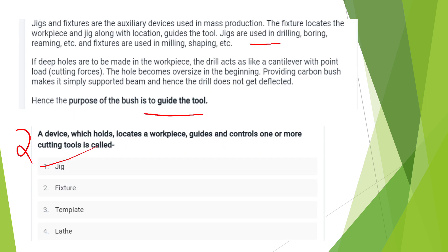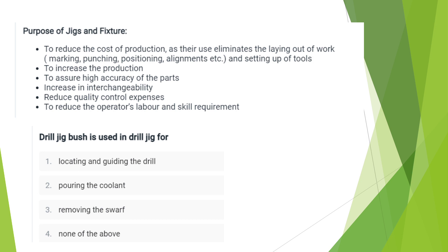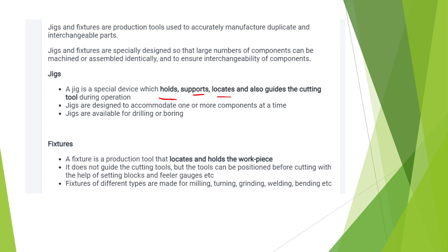The purpose of jigs and fixtures is to reduce the cost of production. The parts are made with high accuracy. Interchangeability increases. Quality control expense, operator skill, and labor requirements are reduced. That is the purpose of jigs and fixtures.